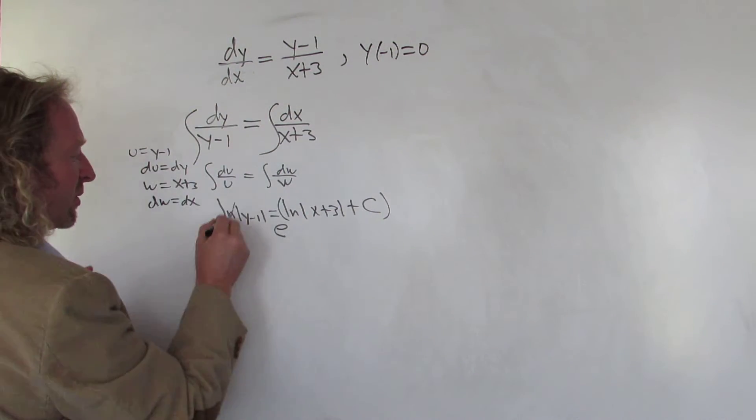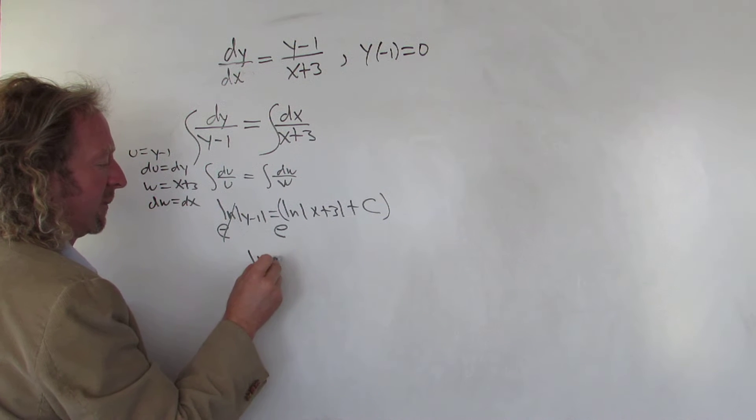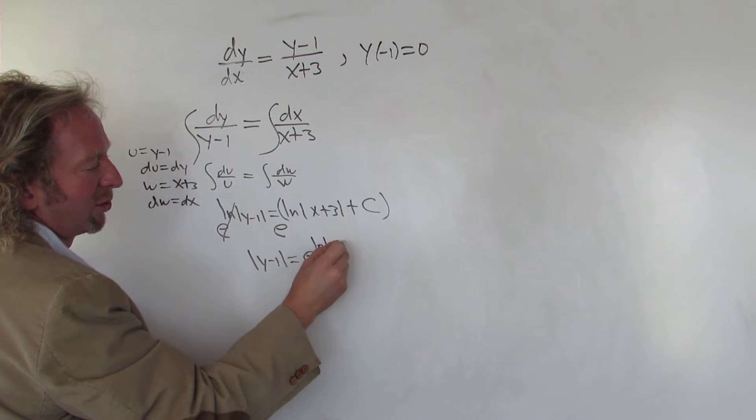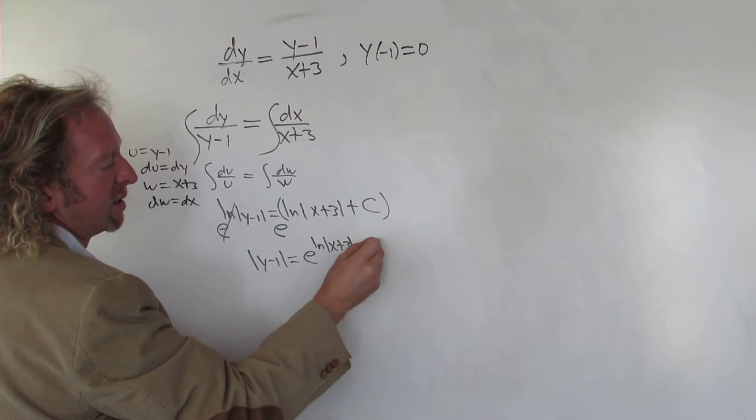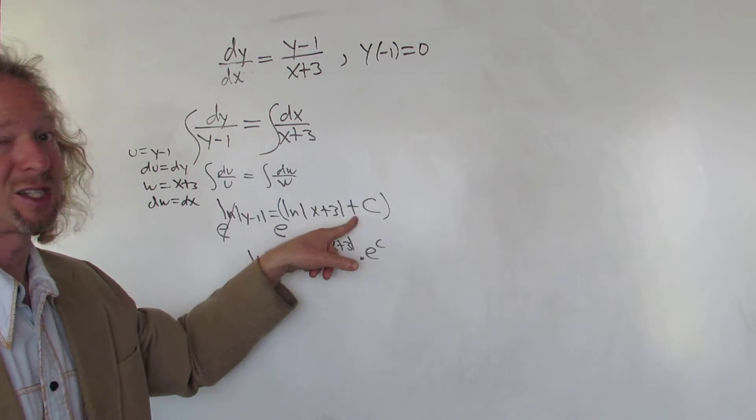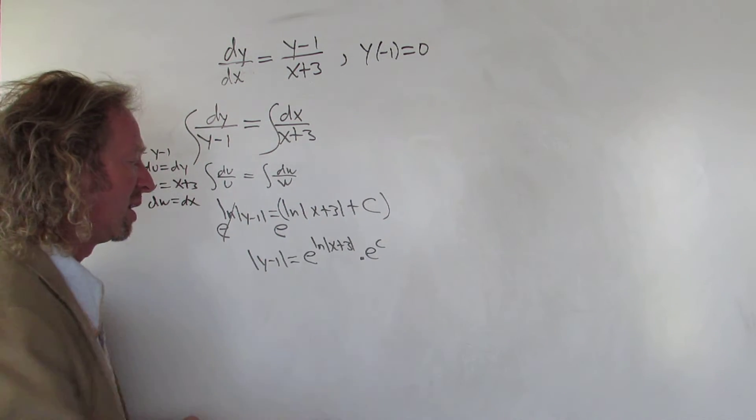This cancels, so we get the absolute value of y minus one equals - and you can rewrite this as e to the ln absolute value of x plus three times e to the c. The reason it's times is because when you multiply these, you're adding the exponents. This cancels.